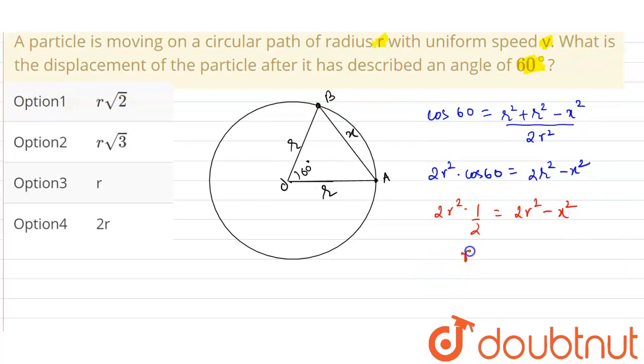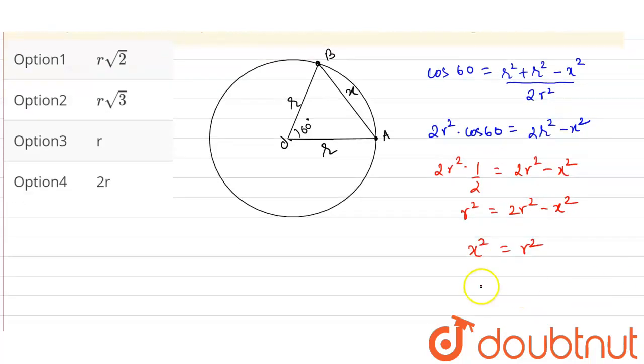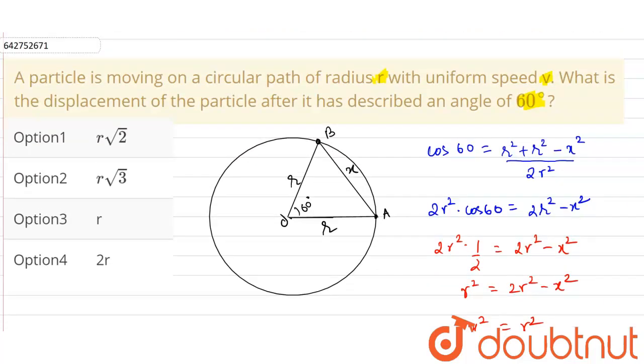So it will be r squared equals 2r squared minus x squared, or what we can say is x squared equals r squared, or x equals r. So the displacement of the particle from A to B when it subtends an angle of 60 degrees is equal to the radius of the path.